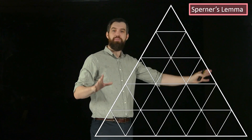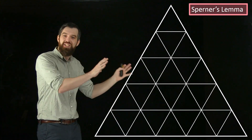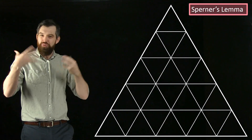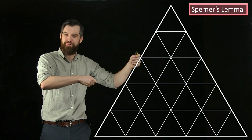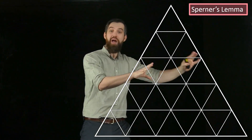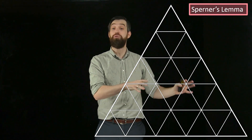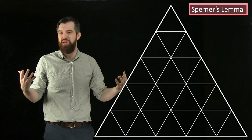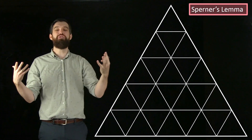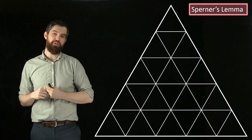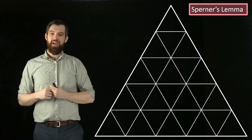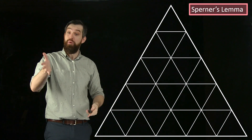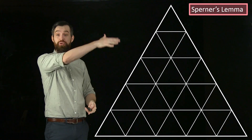I want you to consider some triangle and a sub-triangulation of that larger triangle. A sub-triangulation is just: you take the big triangle, add a bunch of vertices, and connect them so that you get a whole bunch of smaller triangles. I've done it in a way where all the triangles are regular and the same size, but it doesn't matter — you can put the points anywhere and make any sort of combination of triangles you might wish.